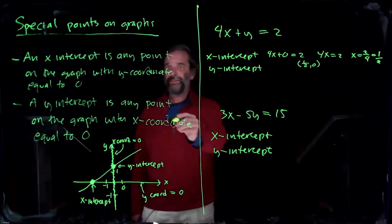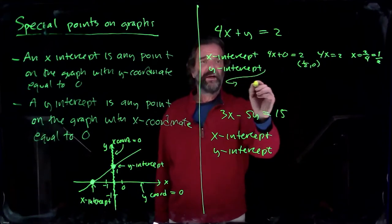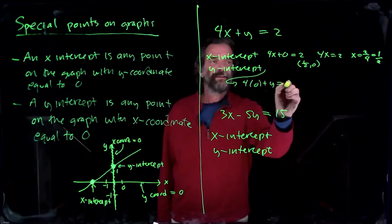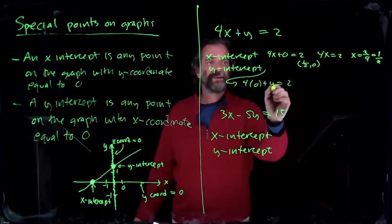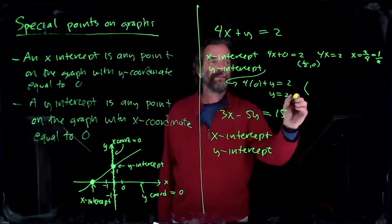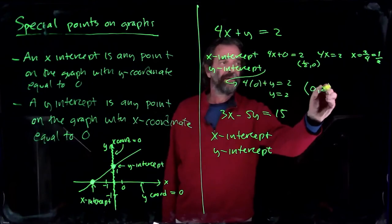So we get one half, zero as the x-intercept. The y-intercept, we find the y-intercept by setting the x equal to 0. 4 times 0 plus y equals 2. And 4 times 0 is just 0. 0 plus y is just y. Y equals 2. And then we get the y-intercept. The y-intercept has x equal to 0. There it is.